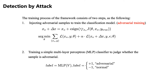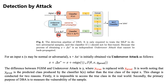Detection by Attack. The training process of our framework consists of two steps: (1) injecting adversarial samples to train the classification model via adversarial training, and (2) training a simple multi-layer perceptron (MLP) classifier to judge whether the sample is adversarial. The classifier H' should not be fine-tuned, because the process of obtaining X plus delta X' is an independent undercover attack that cannot be back-propagated. For an input X — which may be normal or adversarial — the undercover attacked sample is obtained via undercover attack. The difference between FGSM and undercover attack is that Y_true is replaced with Y_pred, where Y_pred is the predicted class produced by the classifier H(X), rather than the true class of the input X.